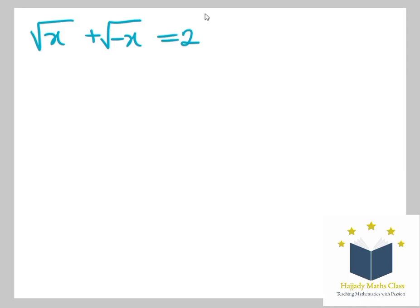We have √x + √(-x) = 2. To solve this, we assume that the value of x here is greater than or equal to 2—it is greater than or equal to 0.